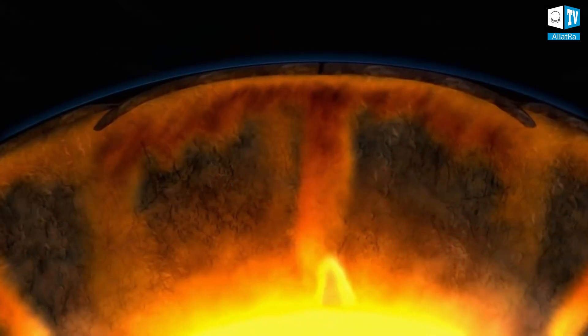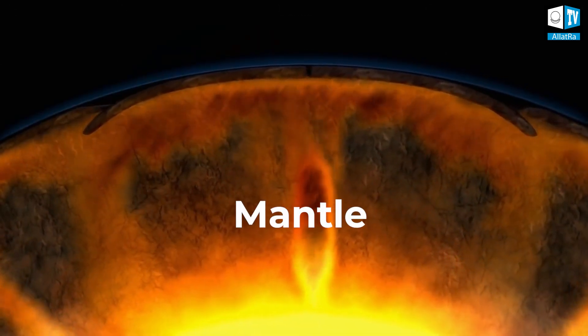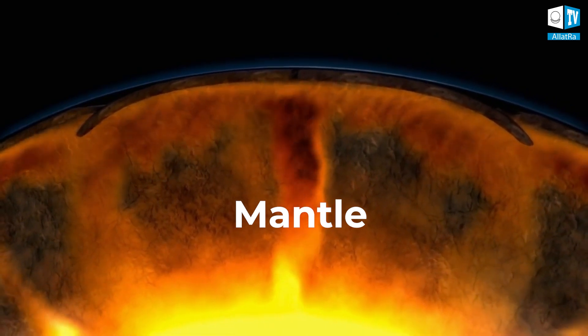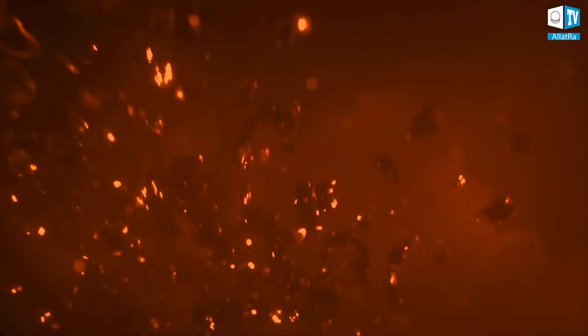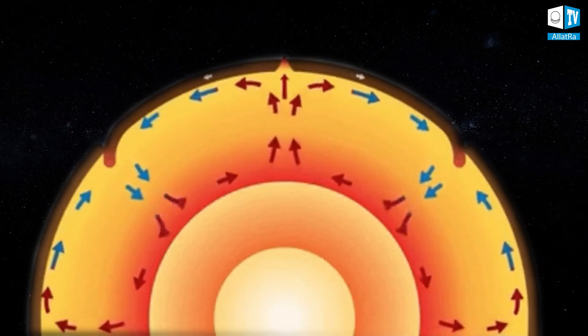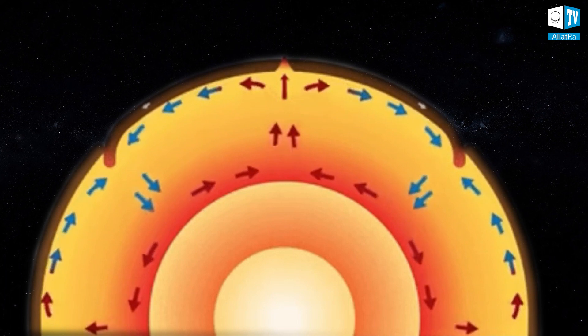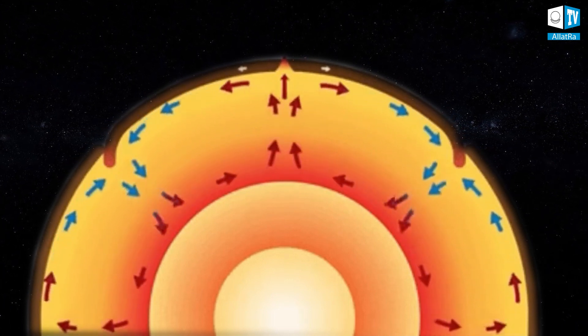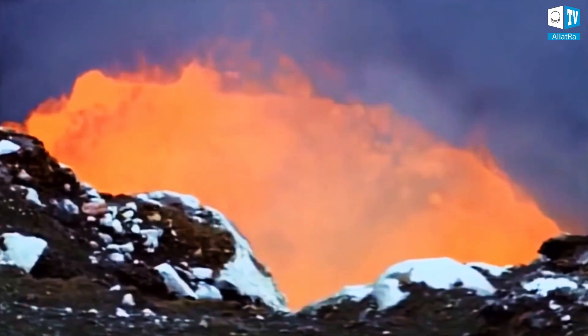The interaction between the mantle and the Earth's core plays an important role in the life of the planet. In the mantle, streams of hot material move upward, while cold streams of mantle matter go downward. This movement of the mantle is called convection. It causes continental drift and, as a consequence, triggers earthquakes and volcanism.